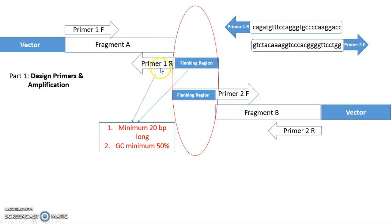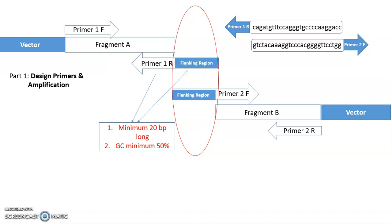There are some criteria to design this kind of primer. The minimum binding region should be 20 bp long, and the GC content should be at least 50 percent for both parts. Each part should meet these parameters. For this kind of overlapping primer overall, it should be no less than 42 or 45 bp — at least 42 bp should be considered.